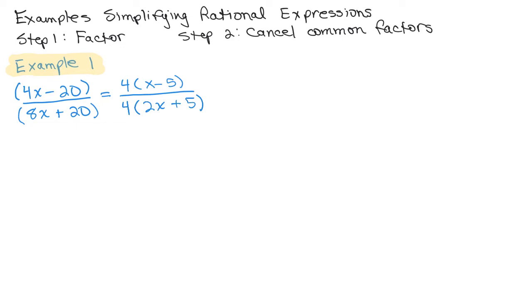And now I see that the 4s are common. Now, if it was 8 over 4, I would cancel and get a 2. But actually both of these cancel, so I can cancel the 4s out. And so my answer here will be X minus 5 over 2X plus 5.